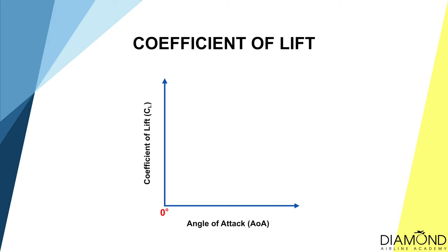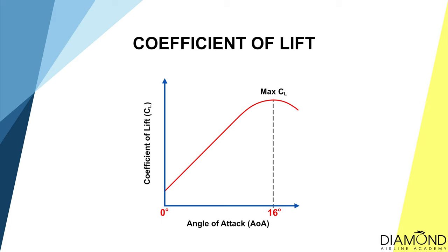For most general aviation aircraft, when the angle of attack is increased to 16 degrees — also known as the critical angle of attack — that is the peak of the coefficient of lift. If the angle of attack is increased beyond the critical angle, the coefficient of lift will be reduced rapidly, and so will the lift being produced. Therefore, the aircraft will lose altitude rapidly, and that is how we know the aircraft has entered a stall.